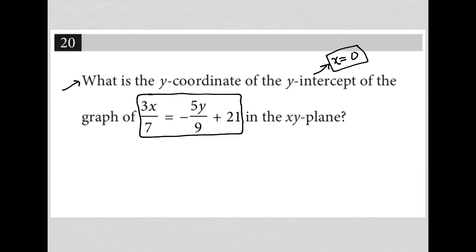So what would happen if x were 0? If x were 0, I'd have 3 times 0, which of course is just 0. 0 divided by 7, which is also just 0. So I'd have 0 is equal to negative 5y over 9 plus 21.